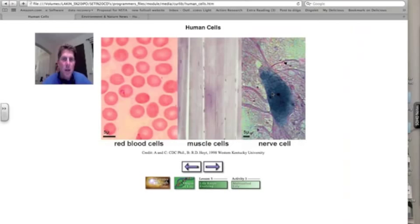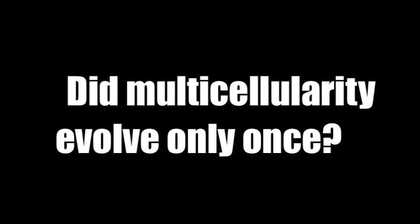So we go back to our tree of life. Remember the tree of life has our three domains: archaea, eukarya, and bacteria. As we look at the tree of life, the question comes up: did multi-cellularity happen only once? Did it evolve just one time throughout the history of life on the earth? And the answer to that of course is no.